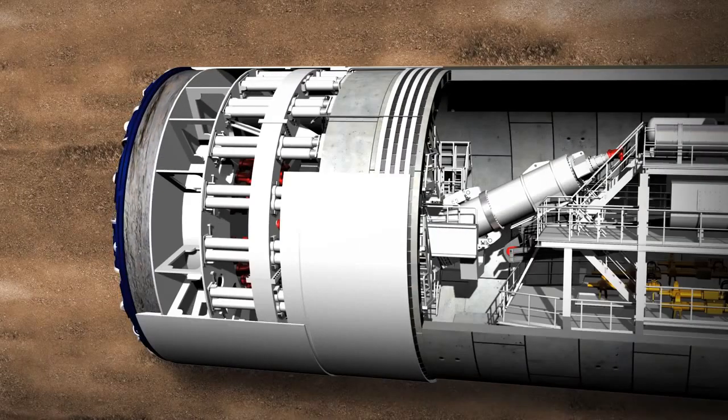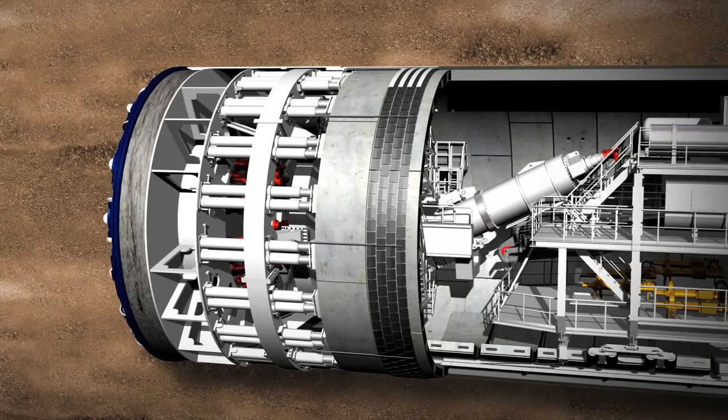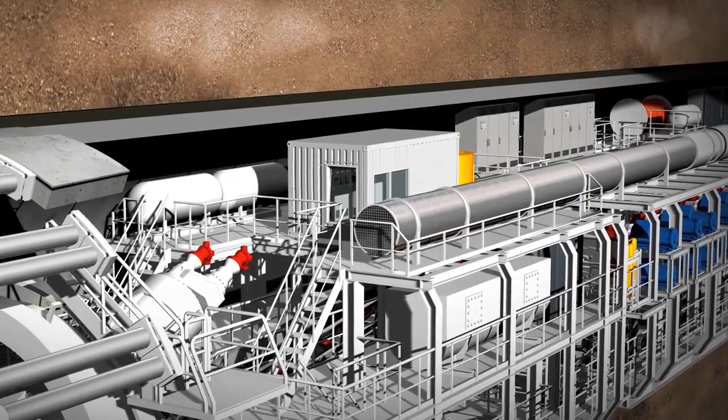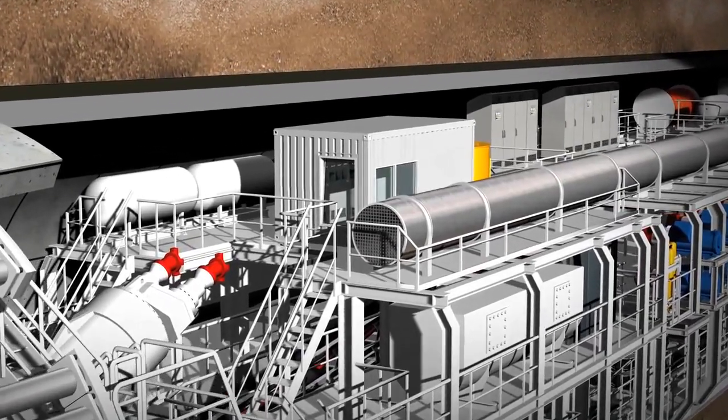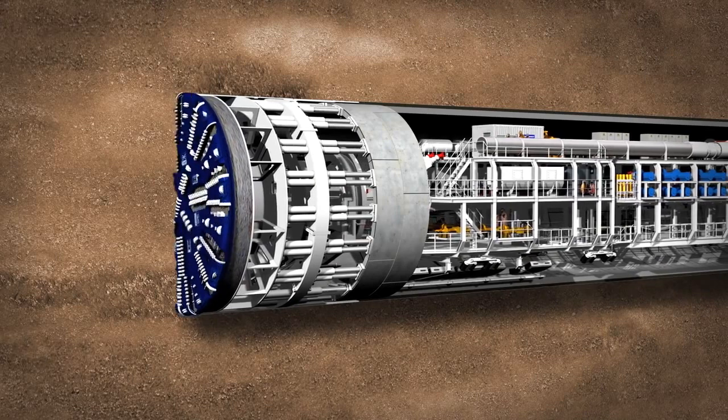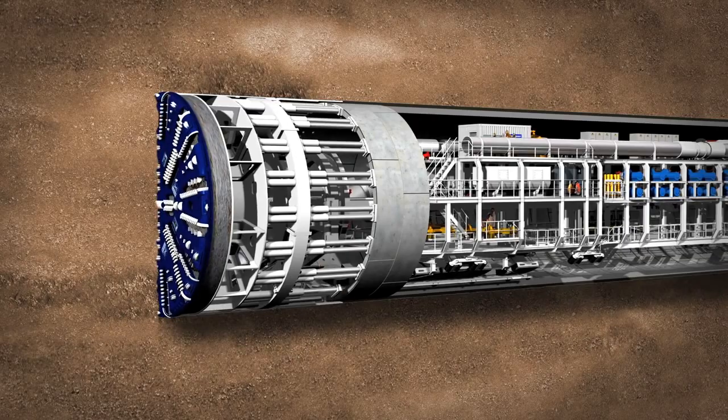During all this work, the people and machines are protected by the shield skin from the saturated ground where water is under pressure. All the readings are displayed on monitors in the central control cabin and fed back to the machine operator. Once each section of ring-building is completed, the next tunnelling phase can start.